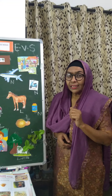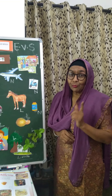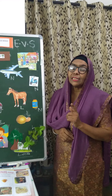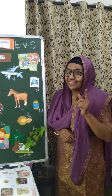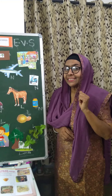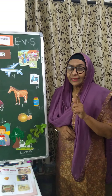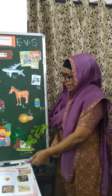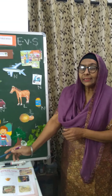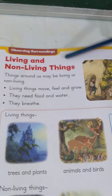Students, from where do we get vegetables and fruits? We get fruits and vegetables from trees. Trees are living things. Let us know more about living and non-living things.